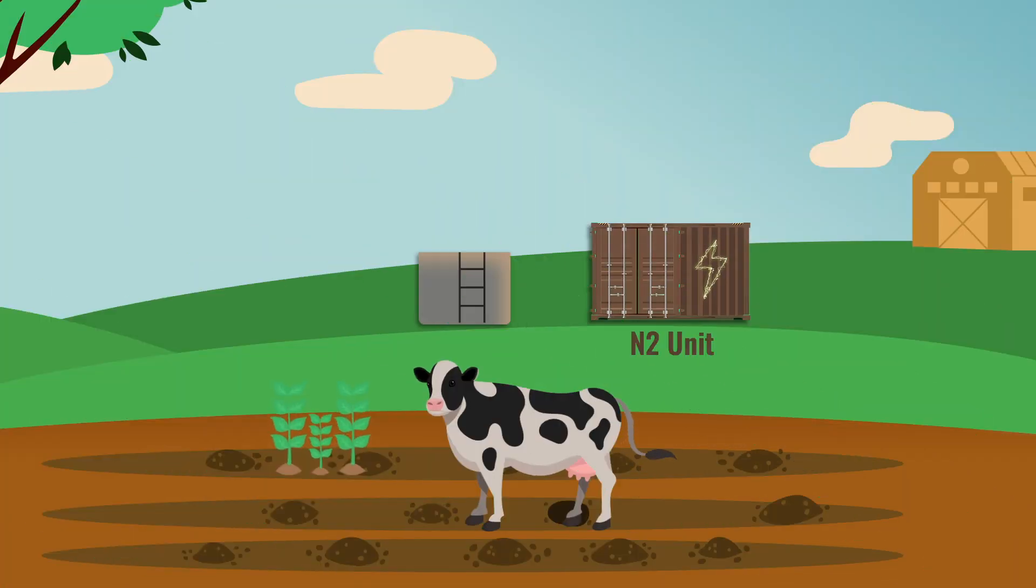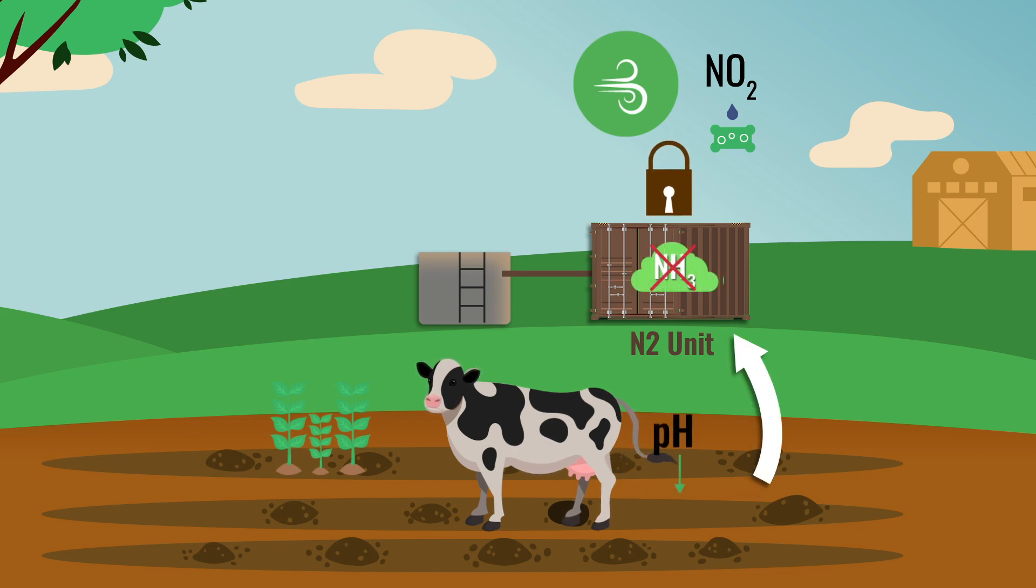This bolt of lightning turns the air into reactive nitrogen in the plasma. It is then absorbed into liquid slurry, which lowers the pH and prevents nitrogen escaping in the form of NH3, ammonia.